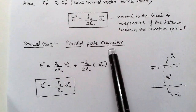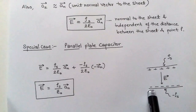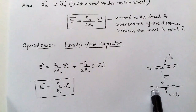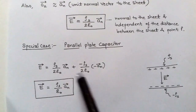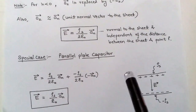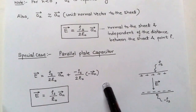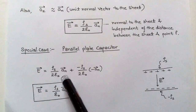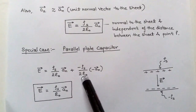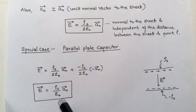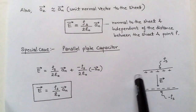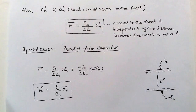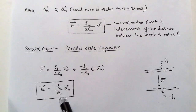There is a special case of two parallel sheets: one carries positive charge density ρs and the other carries negative charge density −ρs, forming a parallel plate capacitor. The electric field is generated from the positive charge and terminates at the negative charge. The electric field intensity due to this parallel plate capacitor is E = ρs/ε₀ â_n.